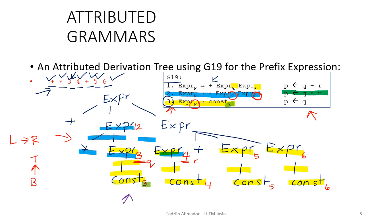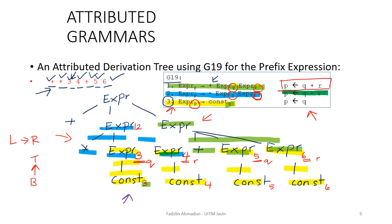Let's move to the branch next to it. This particular branch is implementing rule number one. We know the value of Q, which is 5, and the value of R, which is 6. The attribute computation rule says P should get the value of Q plus R. Since Q is 5 and R is 6, five plus six is 11. Therefore, P gets the attribute of 11.